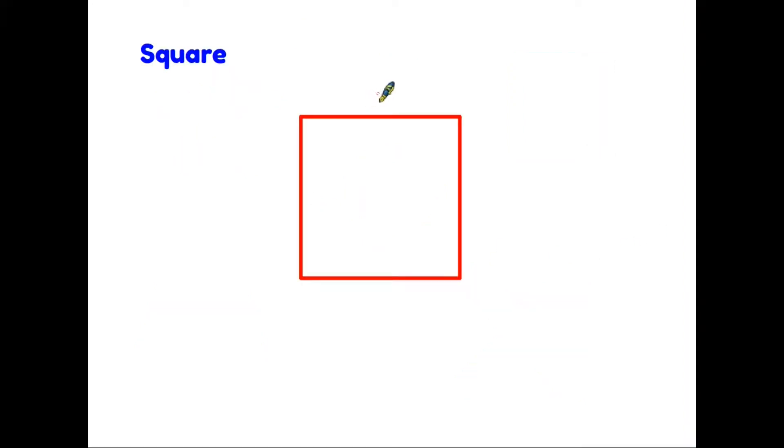Perhaps the first shape we should consider is the square. We need to take a look at it and decide what actually makes it a square. Well, first of all it has four sides, and the important thing about a square is that all four sides are equal.